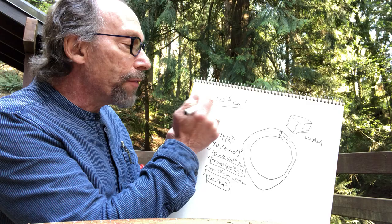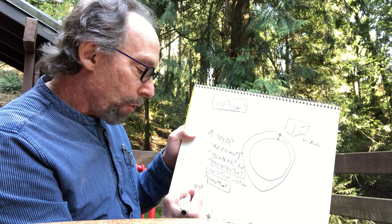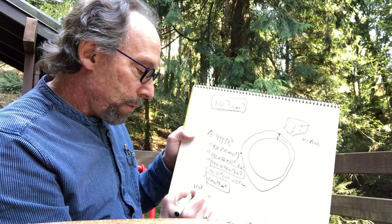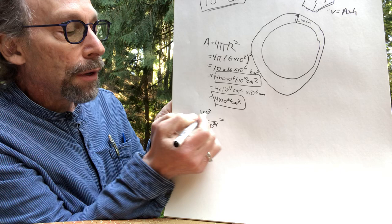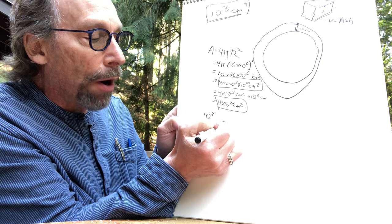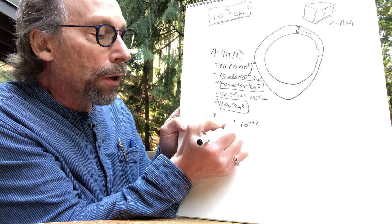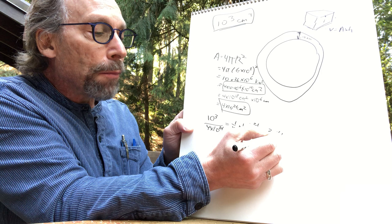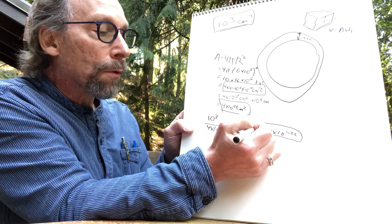Why do we need to know that? Let's consider what the fraction of the atmosphere in a single breath is. The fraction is 10 to the 3rd over 4 times 10 to the 24th. Because exponents are so easy to deal with, that's 10 to the 3 minus 24, which is 10 to the minus 21. And that's about 2 times 10 to the minus 22. So that's the fraction of the atmosphere in a single breath.